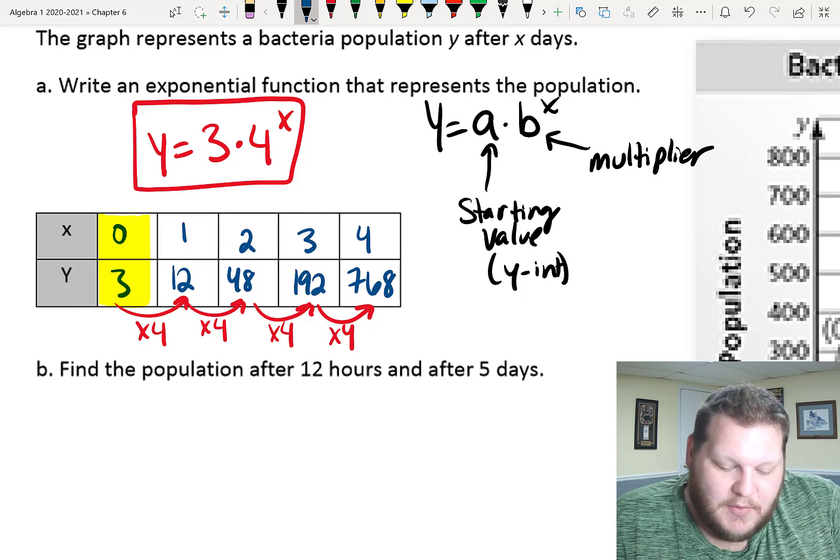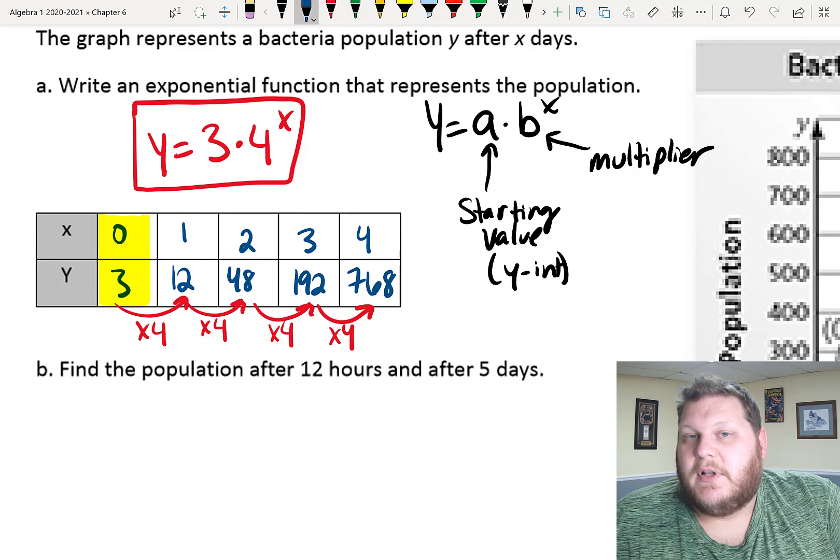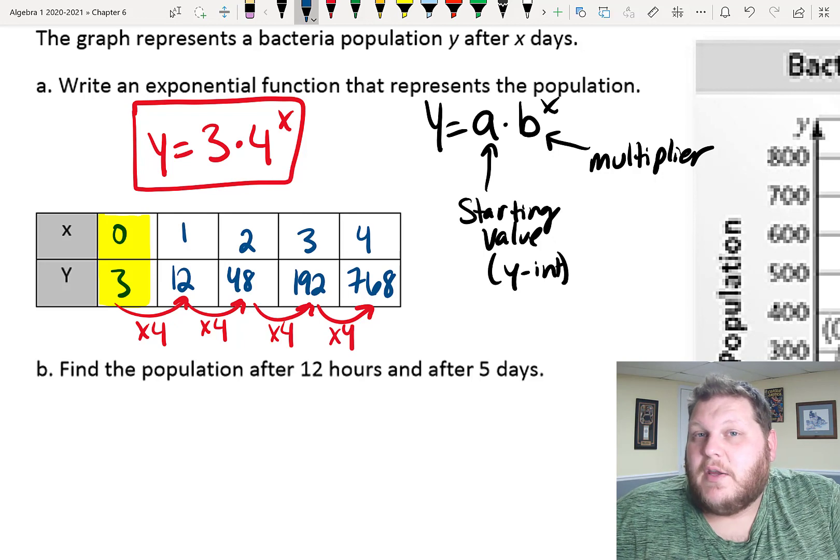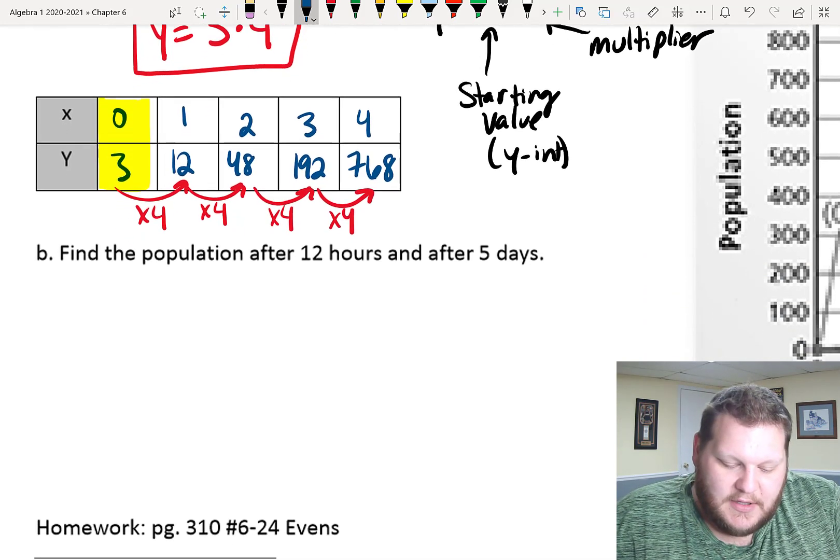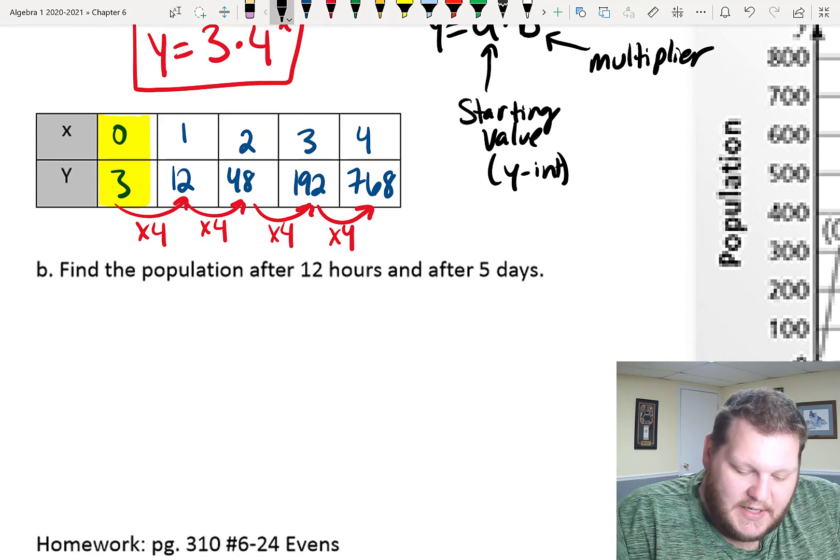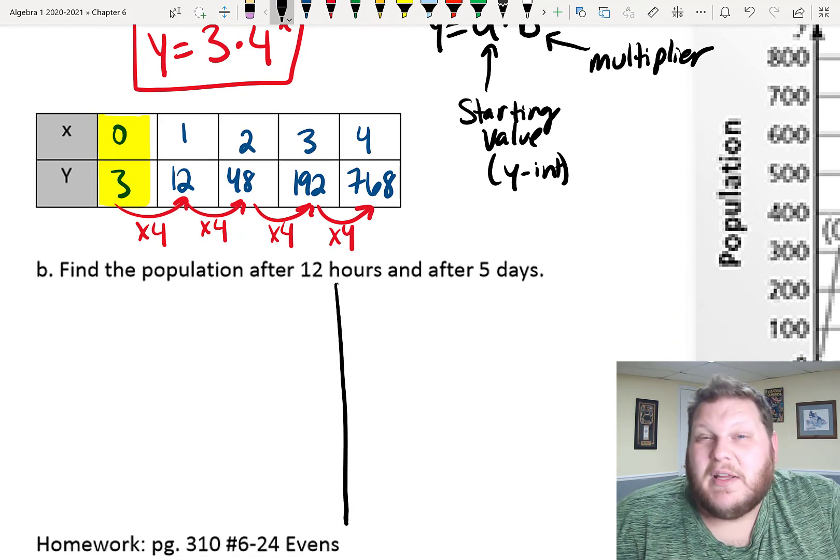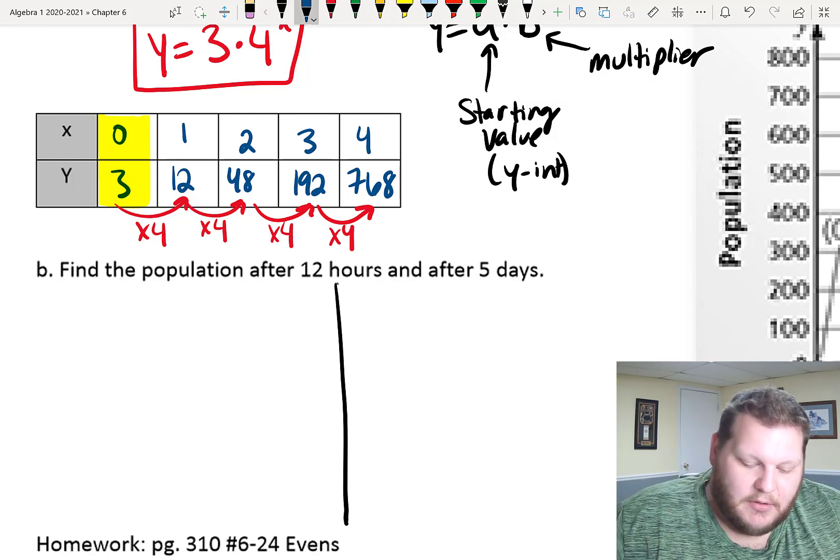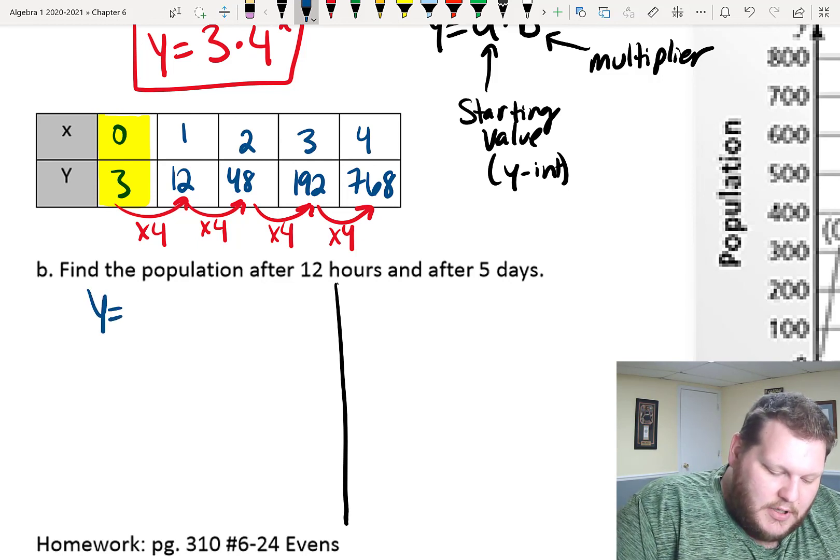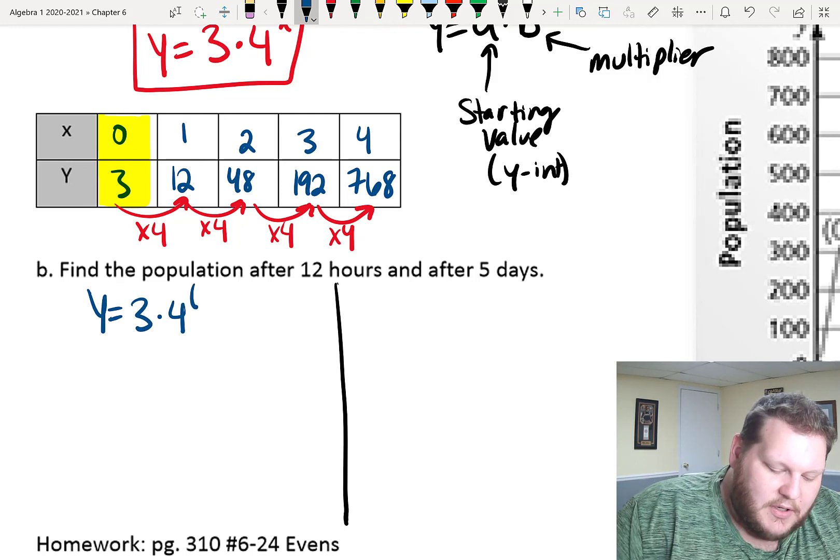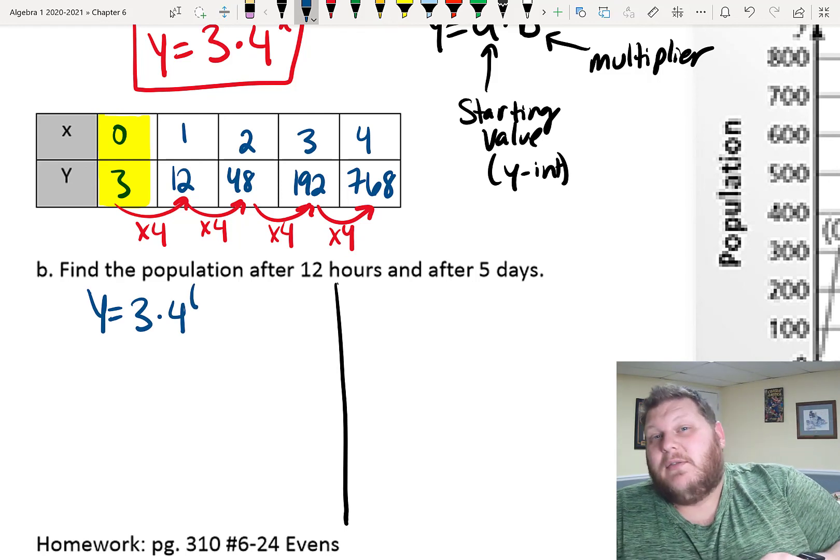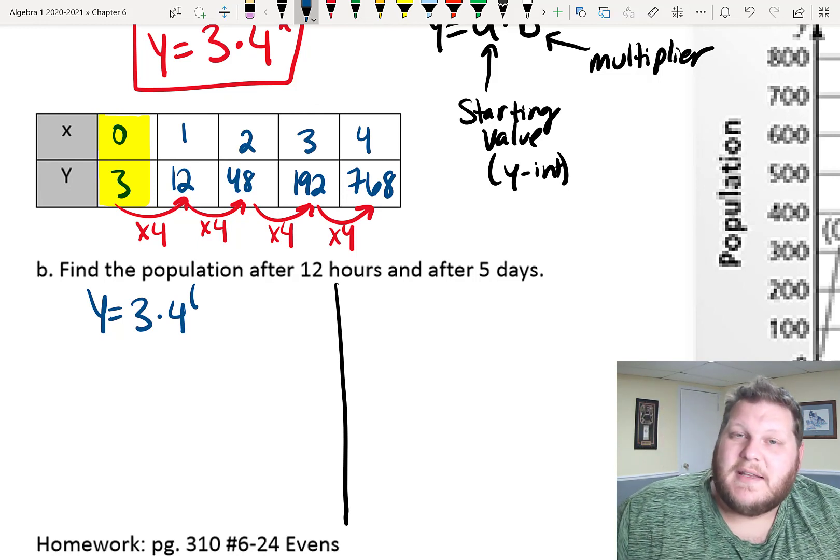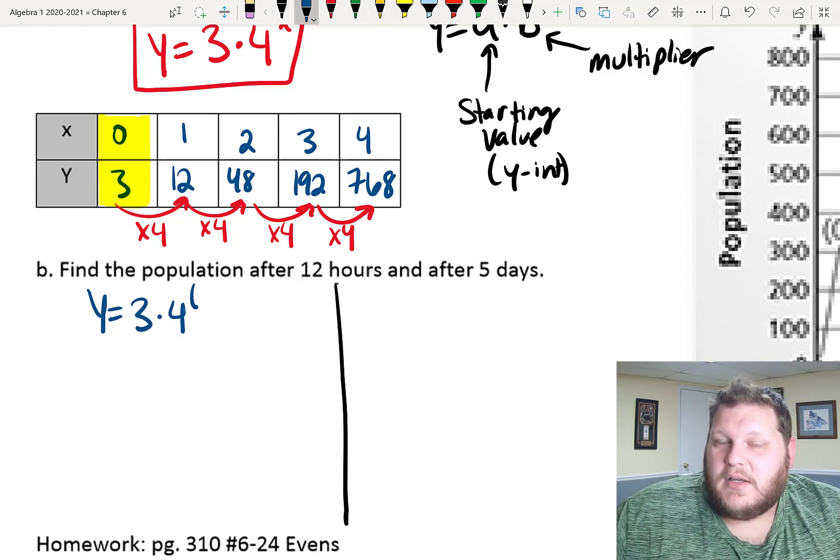Part B is asking me to find the population after certain lengths of time, which is really just a fancy version, a word problem version, of asking us to evaluate for particular x-values. Because the things that I'm given are times, are lengths of time, which is our x-value. So, we're just basically plugging in numbers for x. In this first one, find the population after 12 hours, I'm going to be plugging in a number for my x-value. So, 3 times 4 to the, I need to figure out what that is. Now, be careful. I can't just plug in 12 here, because if we look back at my graph, what my x represents is days. That's our time unit here, is number of days.